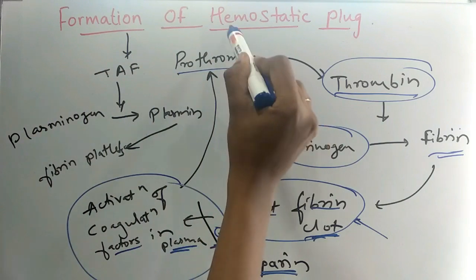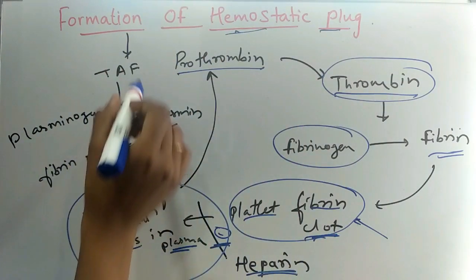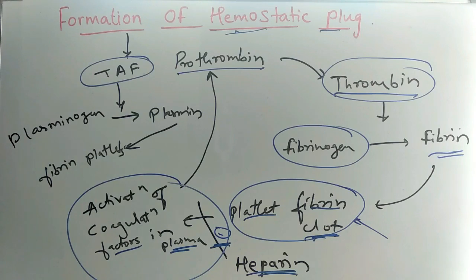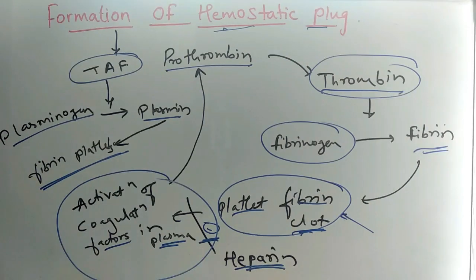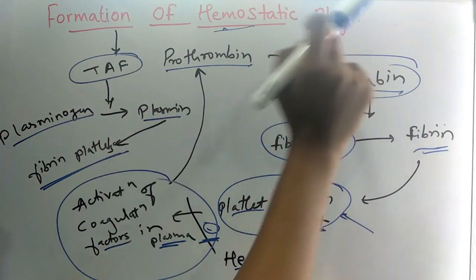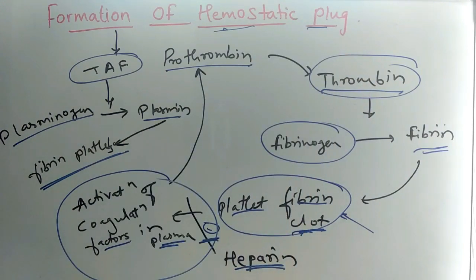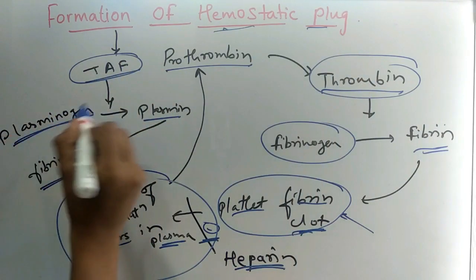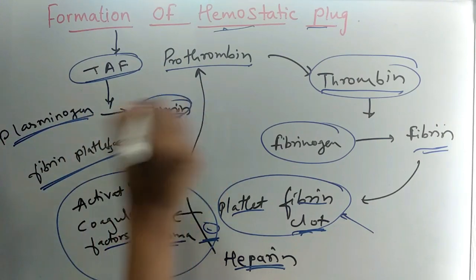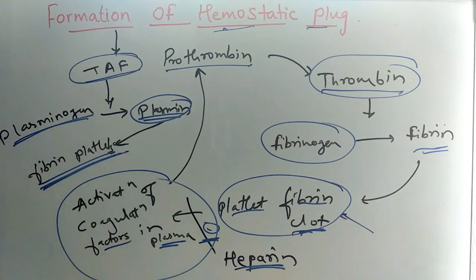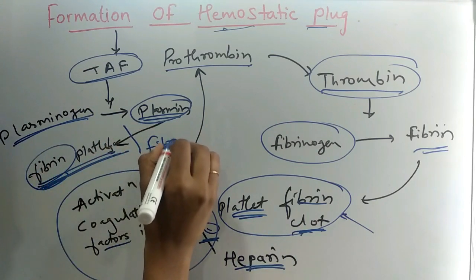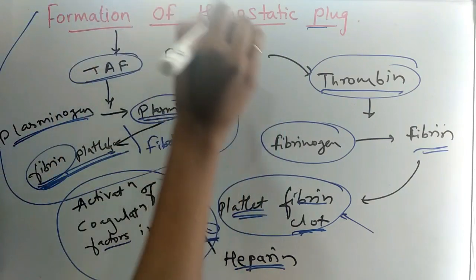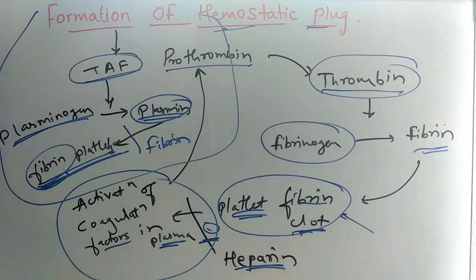After formation of the hemostatic plug, tissue plasminogen activator is released, which converts fibrinogen to plasmin. This plasmin further leads to fibrinolysis — it releases fibrin from the platelets and causes lysis of fibrin. This process is known as fibrinolysis.